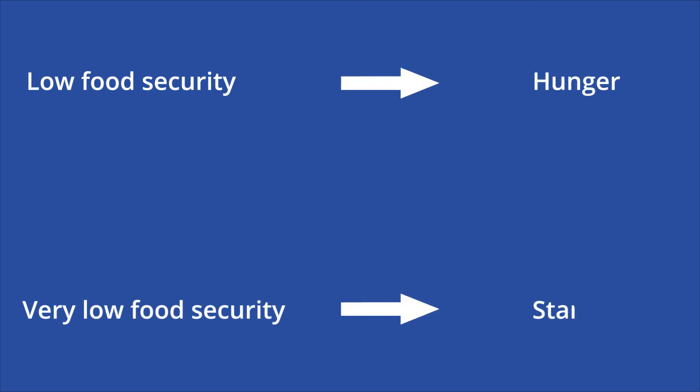For example, some statistics use the term low food security and very low food security instead of hunger and starvation. Although the euphemistic term may be preferable in a scientific context because it is a measurable amount, it could also contribute to a misunderstanding about what exactly these people are experiencing based on their level of food security.